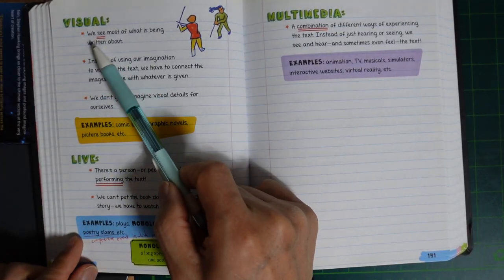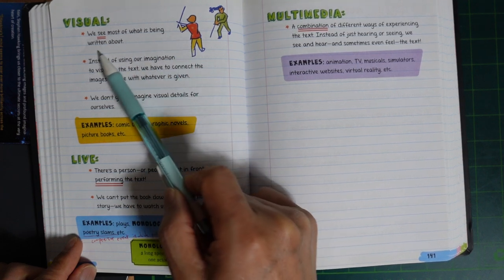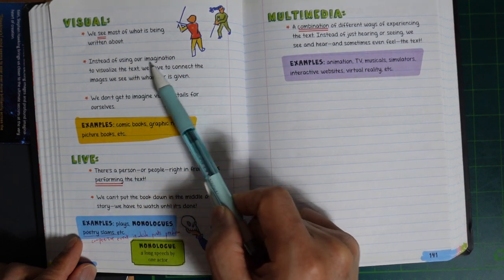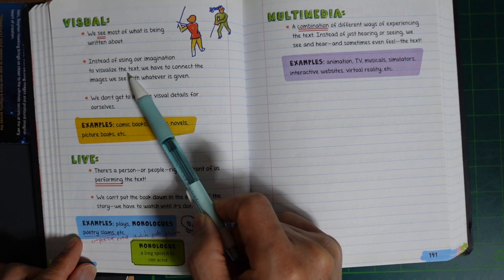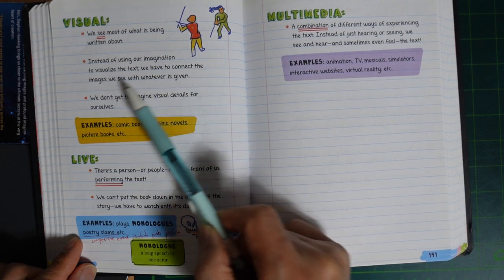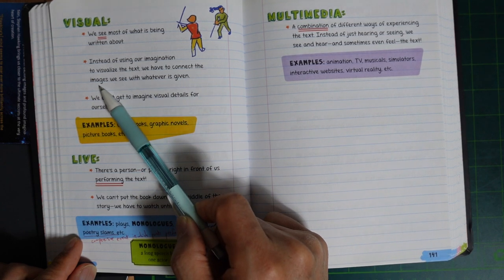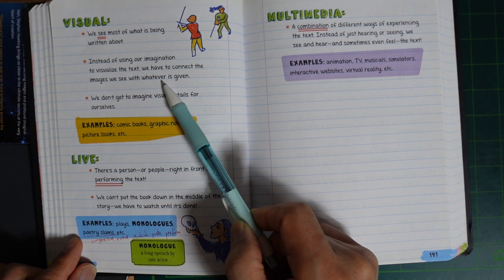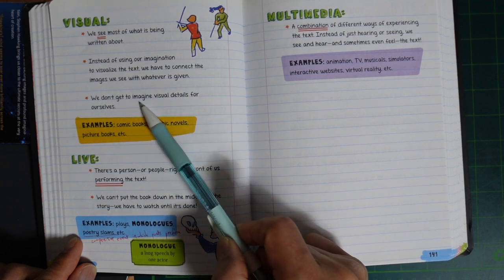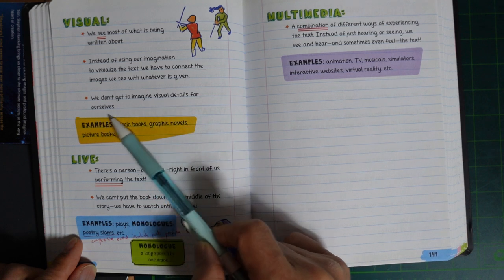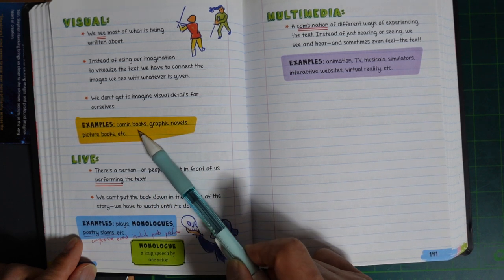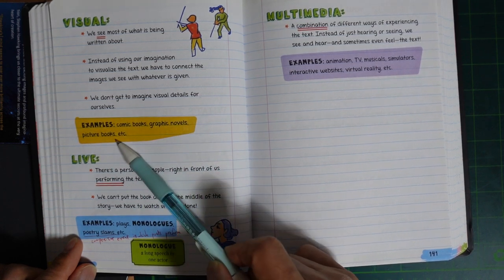Visual: We see most of what is being written about. Instead of using our imagination to visualize the text, we have to connect the image we see with whatever is written. We don't get to imagine visual details for ourselves. Examples: Comic books, graphic novels, picture books, etc.